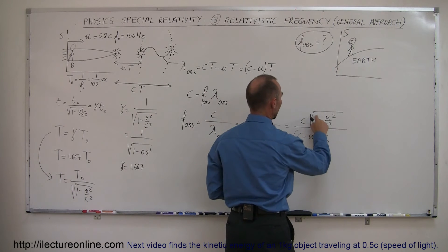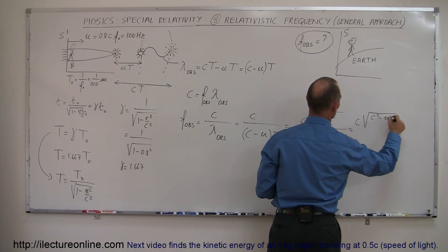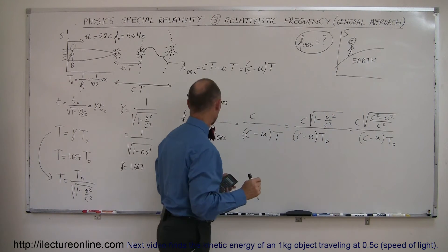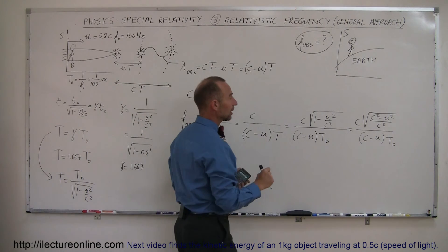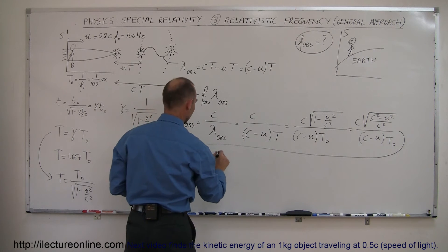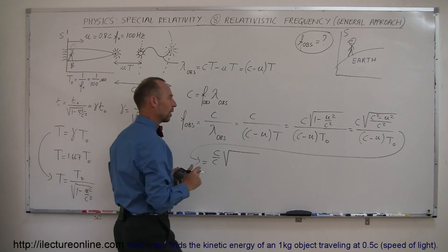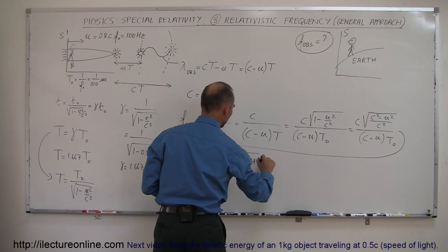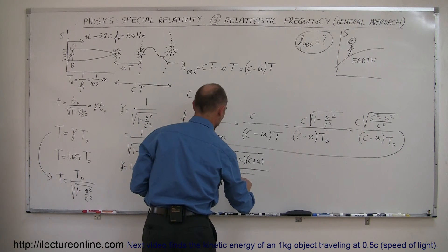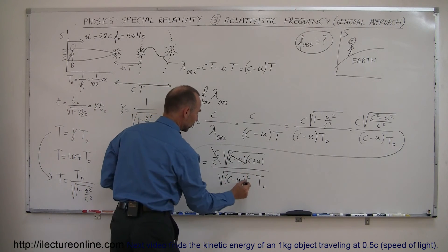Simplifying by multiplying both top and bottom by C², this becomes C times the square root of C² minus U² over C², divided by C minus U times T-naught. We can cancel a C² and then divide by C. Factoring out C² from the radical gives a difference of squares: C² minus U² equals C minus U times C plus U. Writing C minus U as a squared quantity under the radical, that C minus U cancels with the C minus U in the denominator.